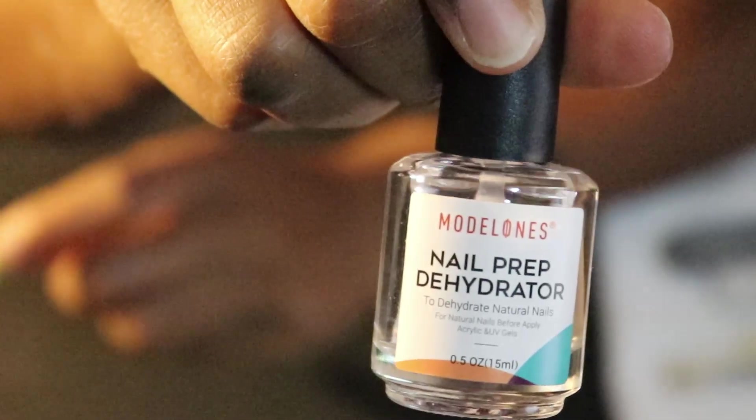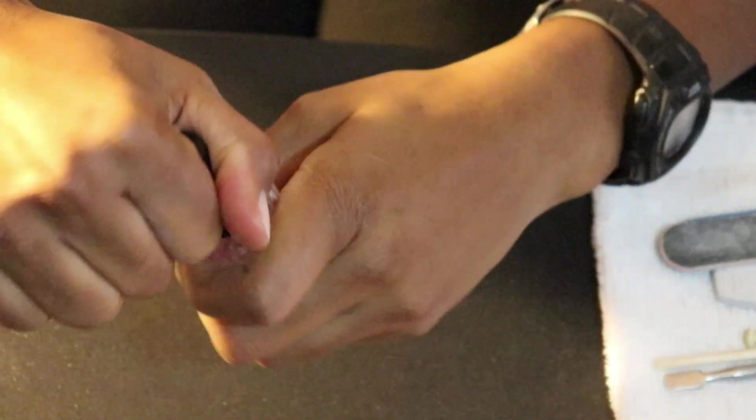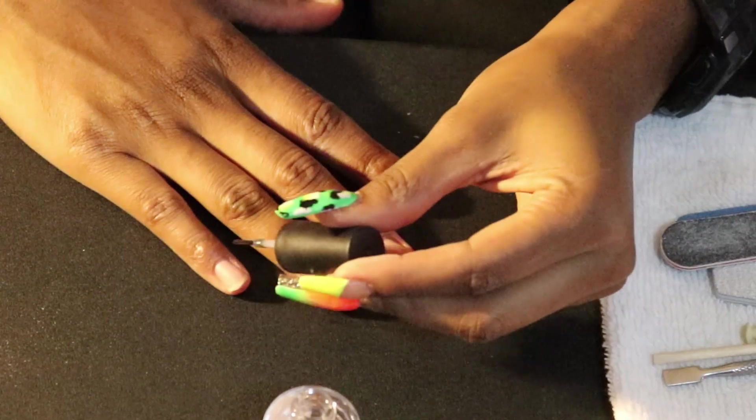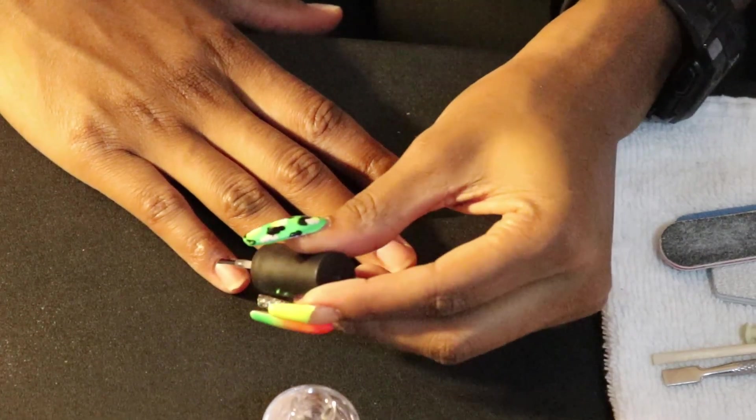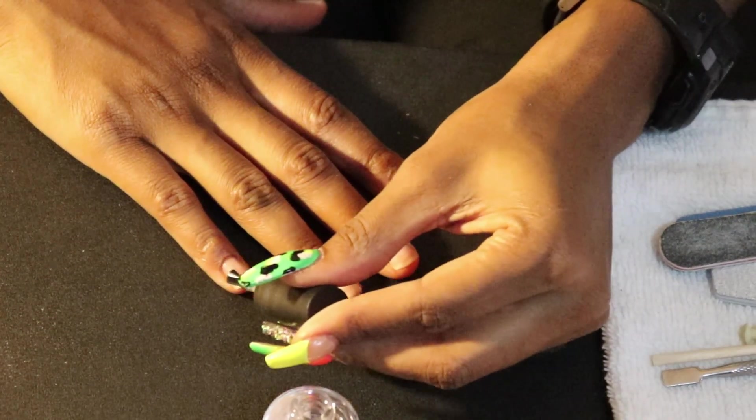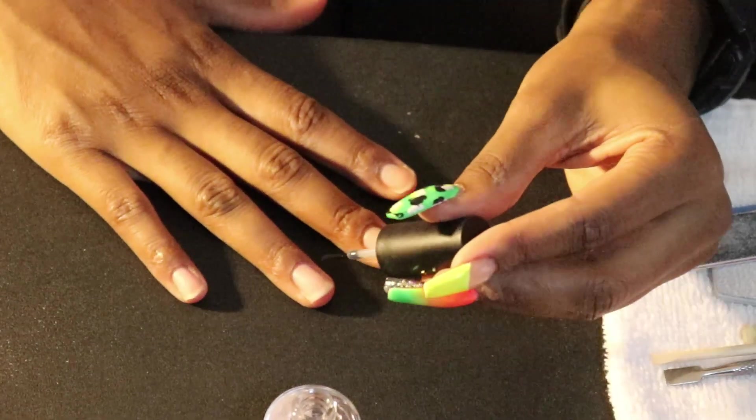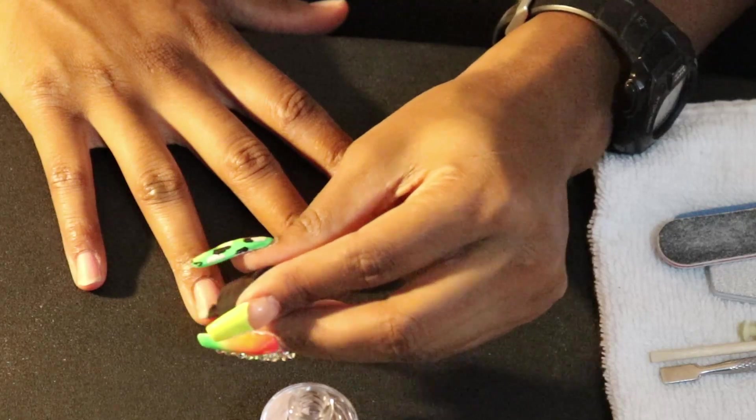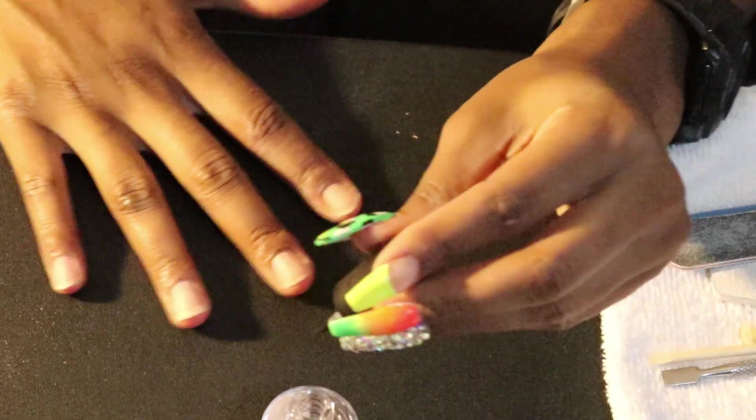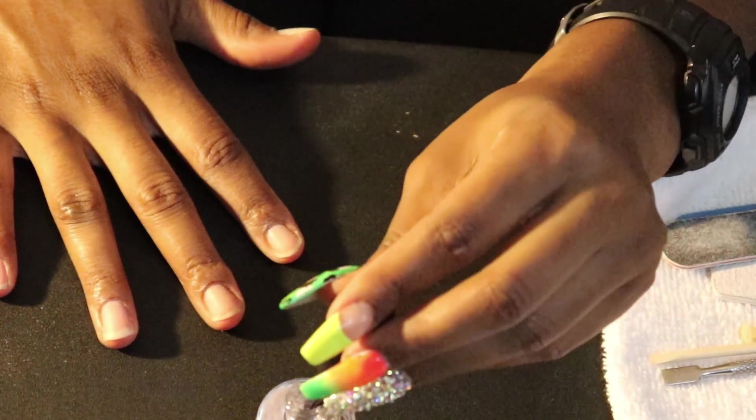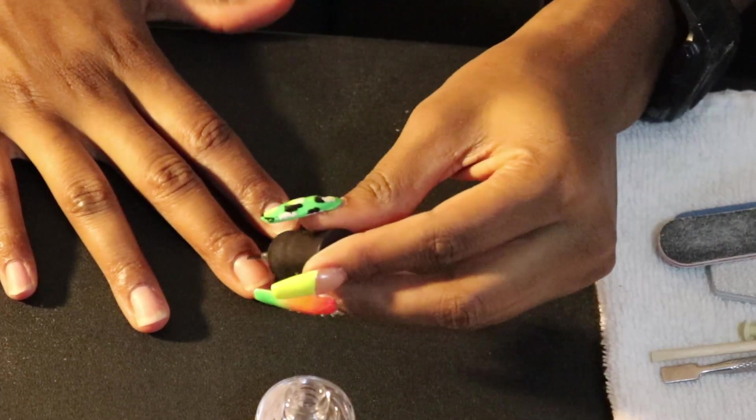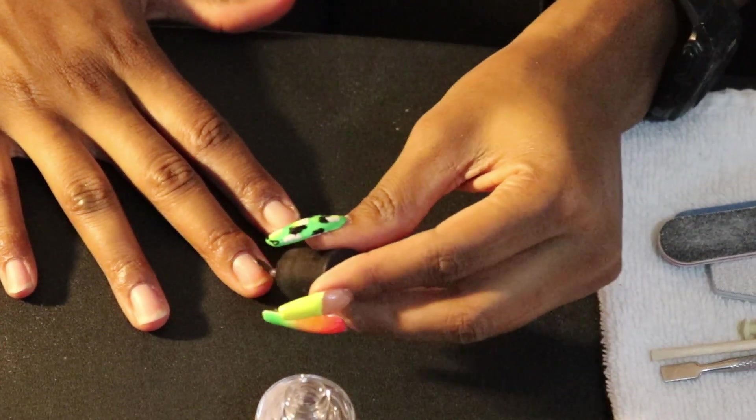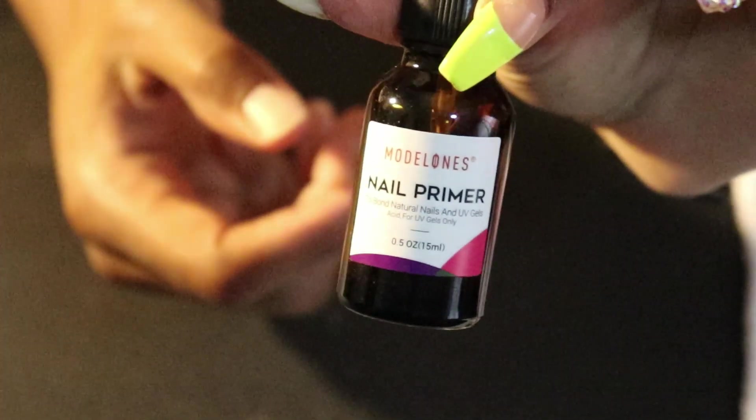Okay, so my first step is going to be using this nail prep dehydrator. What this does is make sure that your nail is completely dried out, creating the perfect surface for the acrylic to bond to. It's going to remove all the oils. Don't worry if this gets on your skin—try not to waste product, but just apply a generous amount to each nail.